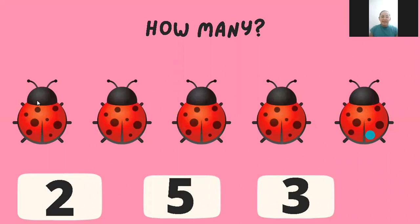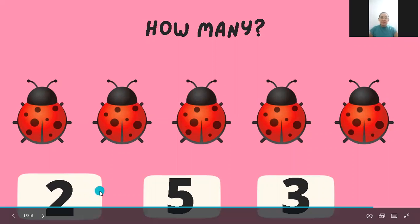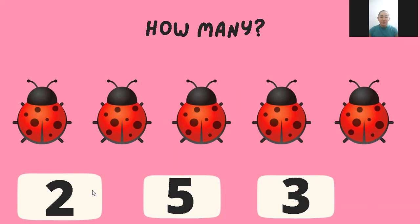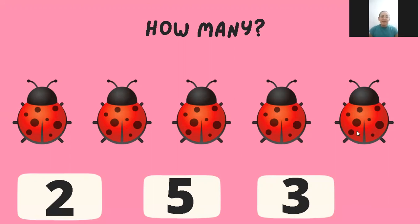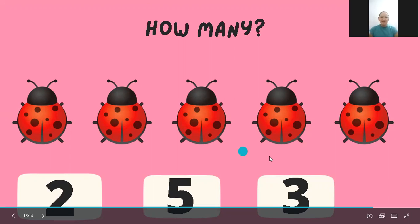Let's count ladybugs. How many ladybugs do we have in here? Let's count: one, two, three, four, and five ladybugs. We have five ladybugs. So which one of these numbers is the number five? Is this the number five? No — this is the number two. Is this the number five? No, it is three. And this? Is this the number five? Yes! It's the number five. We have five ladybugs.